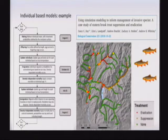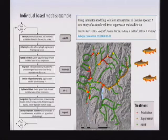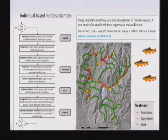They tested different eradication and suppression scenarios. With electrofishing you can kill a lot of adults, but because of their size you cannot target juveniles. With chemicals, it is more impacting on the environment, but you kill adults and juveniles simultaneously, suppressing the entire population — and this is actually much more effective. They tested these different techniques and found a potential solution.